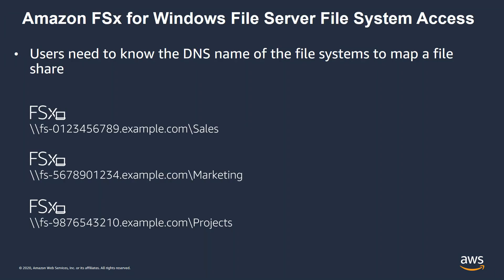In order to use Amazon FSx for Windows File Server and get file system access, users need to know the DNS name of the file system to map a file share to it. For example, we created three Amazon FSx for Windows File Systems listed here. In order to access these file systems, the user would need to know this DNS name in order to map a file share to it.